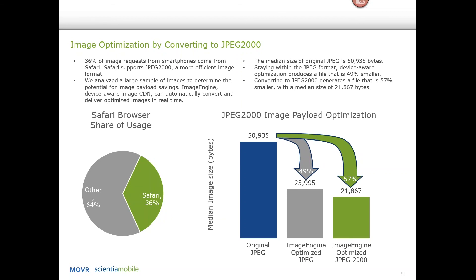It's also worth mentioning that when I say better quality, JPEG 2000 is capable of using different compression rates on different parts of the image. So the background may be more blurred with JPEG 2000, while the details are still crisp and sharp. With JPEG, you have the same compression with visible artifacts all over the image. So visually, JPEG 2000 is by far superior to JPEG.